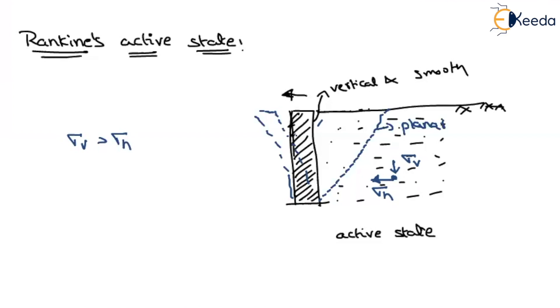Why? Because as the retaining wall is moving away from the backfill, the intensity on the wall will decrease because only this part of the soil will be in contact with that. That's why the horizontal stress will decrease.